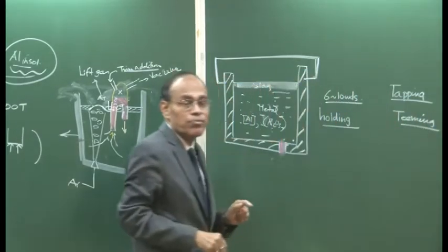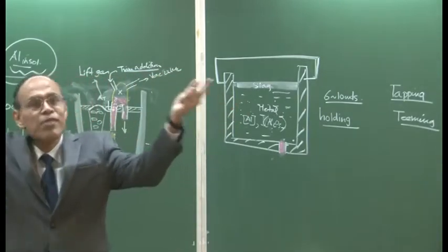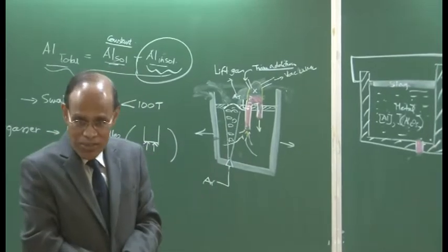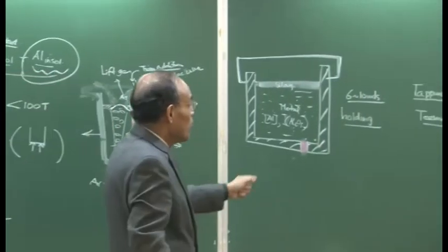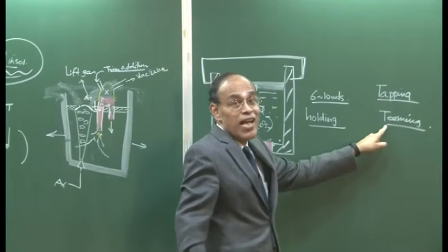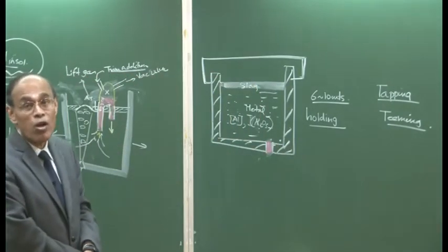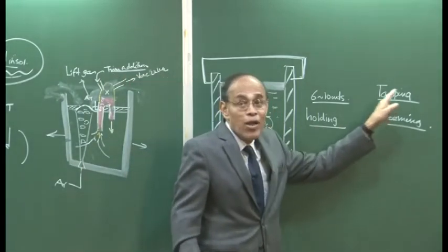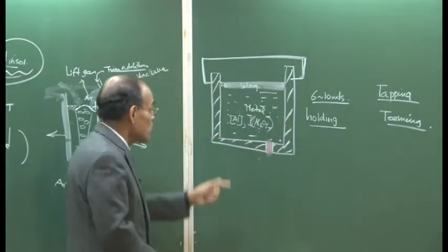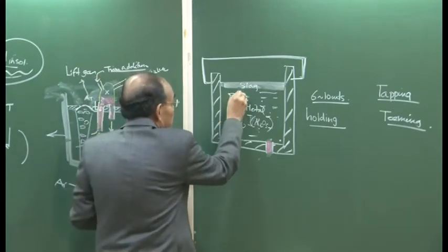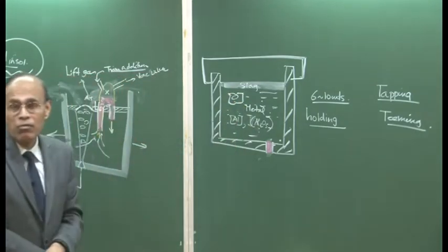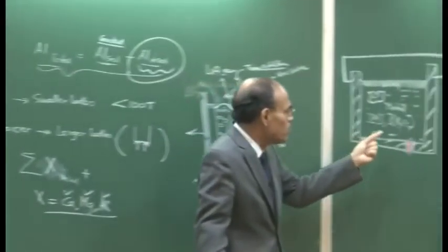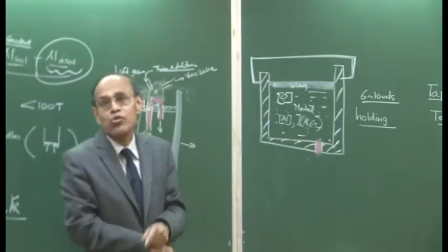In a tapping operation, the transfer of oxygen from the atmosphere is not an issue because the melt already contains a lot of oxygen in the oxygen steelmaking process. During the teeming process, however, the transfer of oxygen and interaction with the atmosphere is very, very important. At the dissolved oxygen level in a deoxidized ladle is extremely small, and we have made great effort to remove nitrogen and hydrogen. We cannot afford the molten metal to come in contact with the atmosphere now.